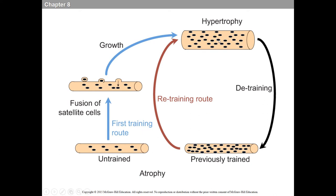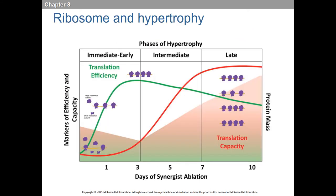That's actually what muscle memory is. For younger people, I recommend getting your muscles as large as you possibly can now because satellite cell incorporation is much easier when you're younger. The more satellite cells you have in your muscles, the easier it is to recover from any layoff from exercise.